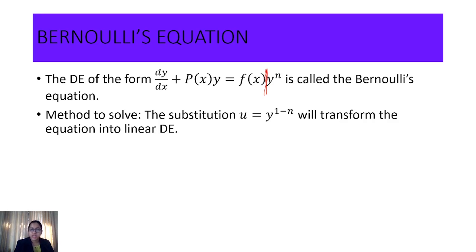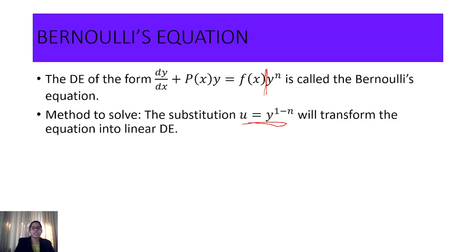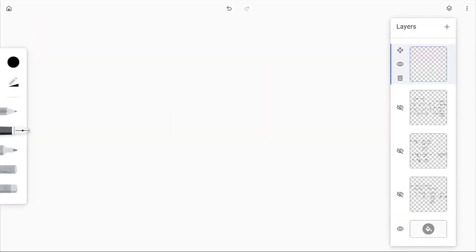Any differential equation of this form is called a Bernoulli equation. To solve it, again we use the method of substitution: we substitute u = y^(1−n). When we do this, the Bernoulli equation — which is not linear — transforms into a linear differential equation that we can solve.